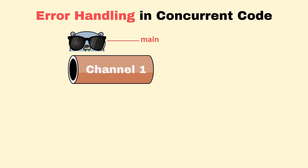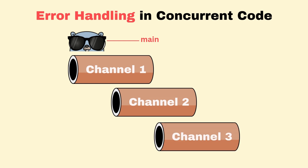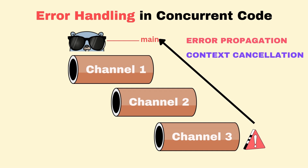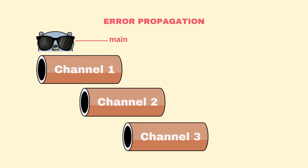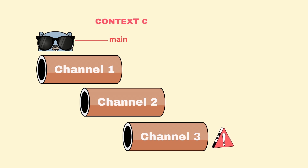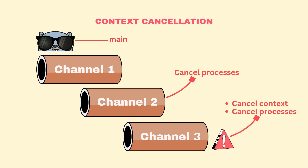What happens when things go wrong in concurrent code? Error handling in concurrent programs is notoriously tricky. If a Go routine encounters an error, how do you propagate it back to the main flow? There are two approaches: error propagation using dedicated error channels, where each Go routine sends either a result or an error and the main Go routine collects and handles it, or context cancellation, where if one Go routine encounters a fatal error it can cancel a context that other Go routines are monitoring, triggering a graceful shutdown.